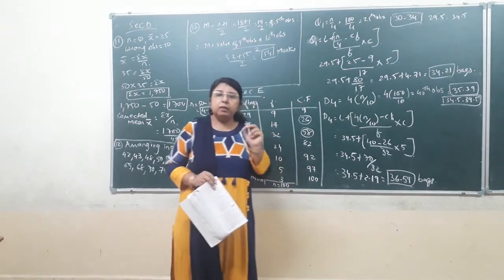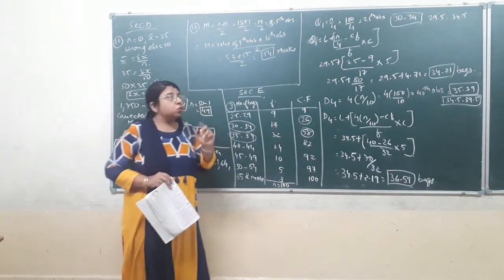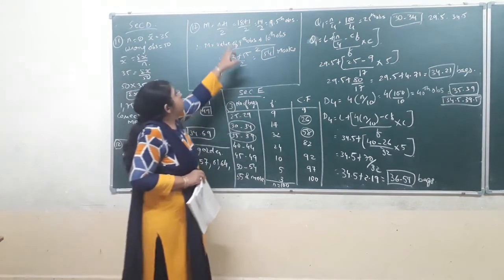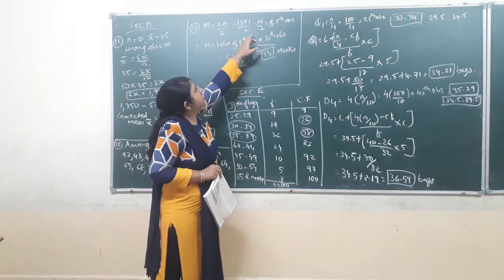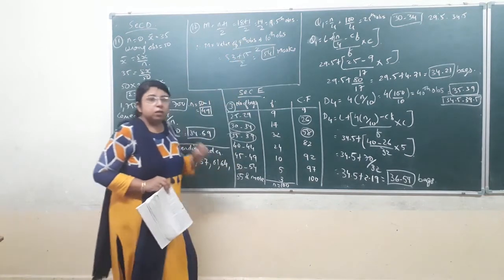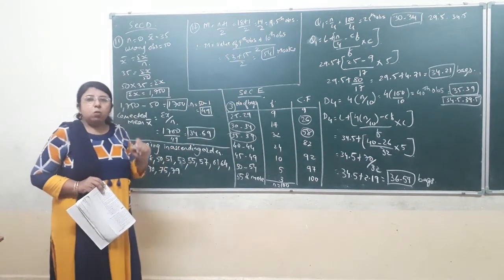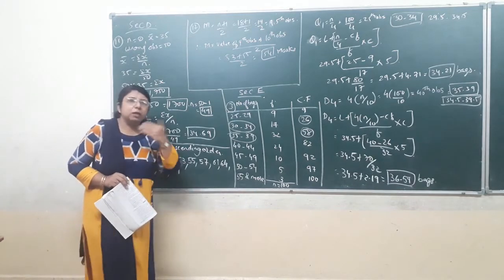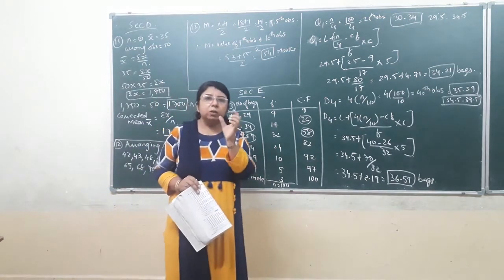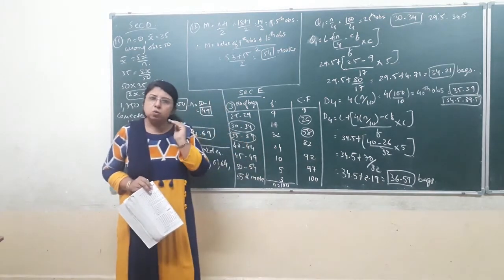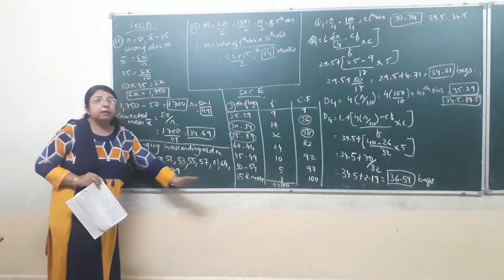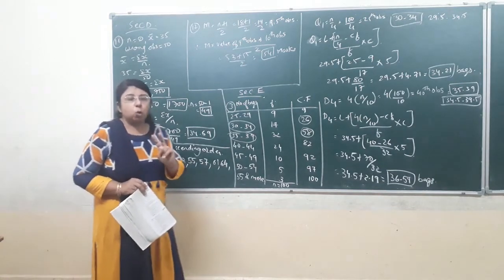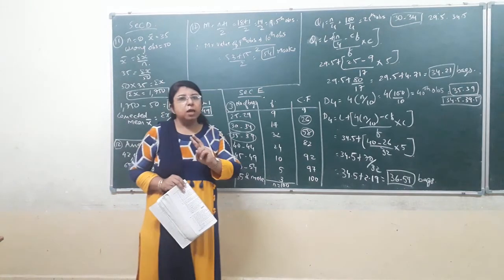We have to find the median of all 18 students. So make it clear: we write the value of n as 18, not 15. So 18 plus 1 divided by 2 is equal to 19 divided by 2, which is equal to 9.5. So now the 9.5th observation — how can we find the 9.5th observation? We cannot take the 9th value or 10th value alone. It is the middle value between the 9th and 10th. So we have to find the average of these two observations, that is the 9th observation and the 10th observation.